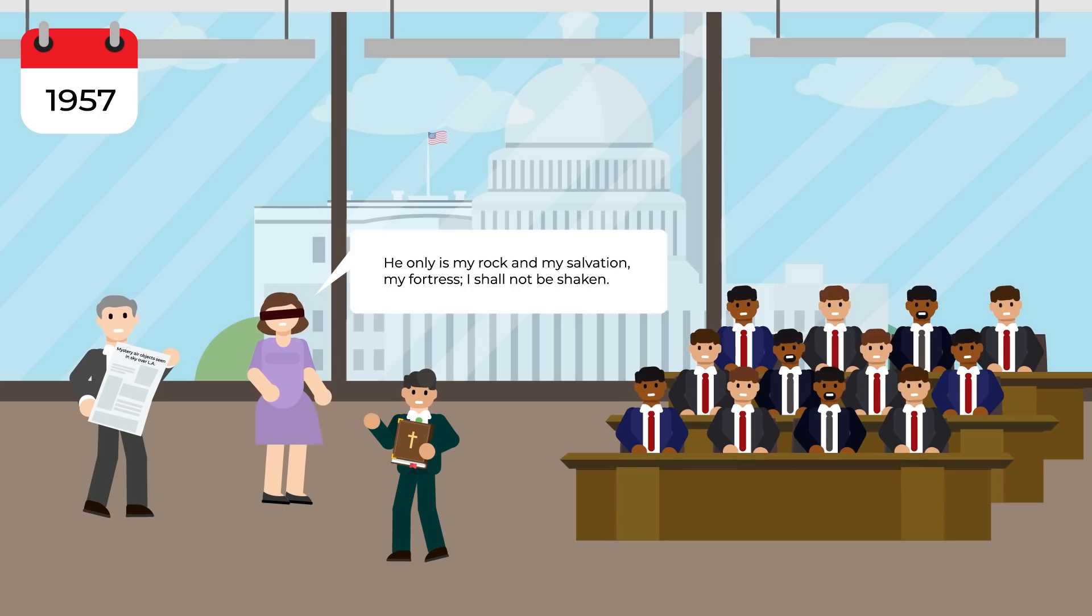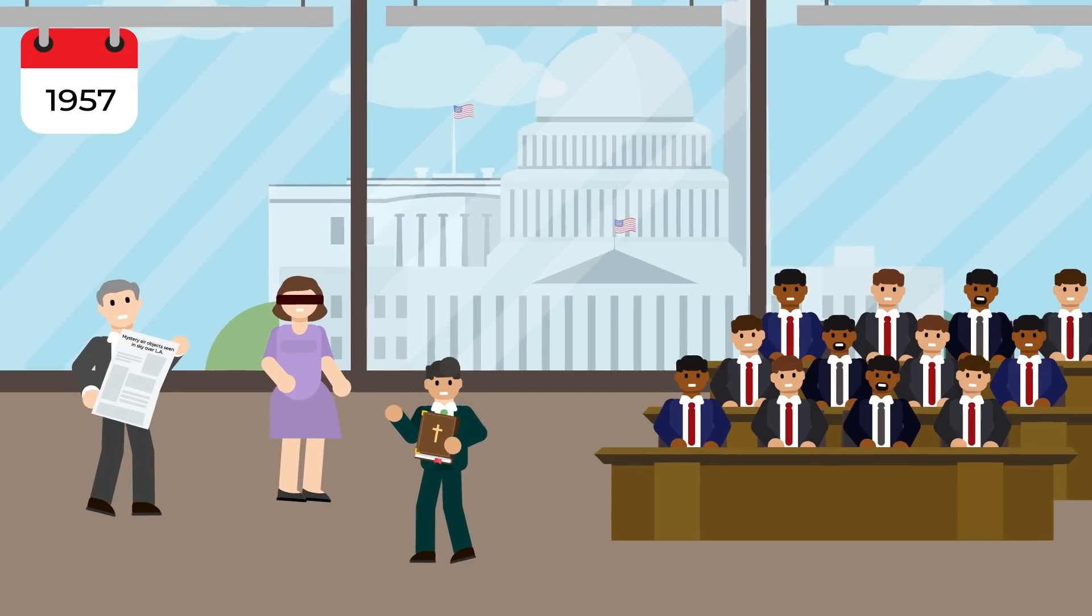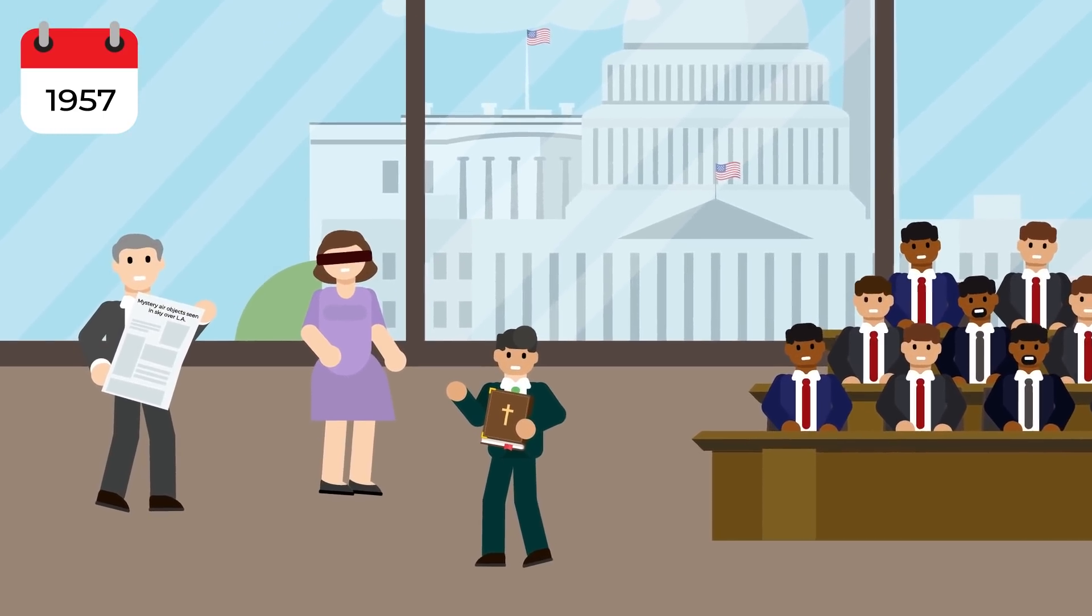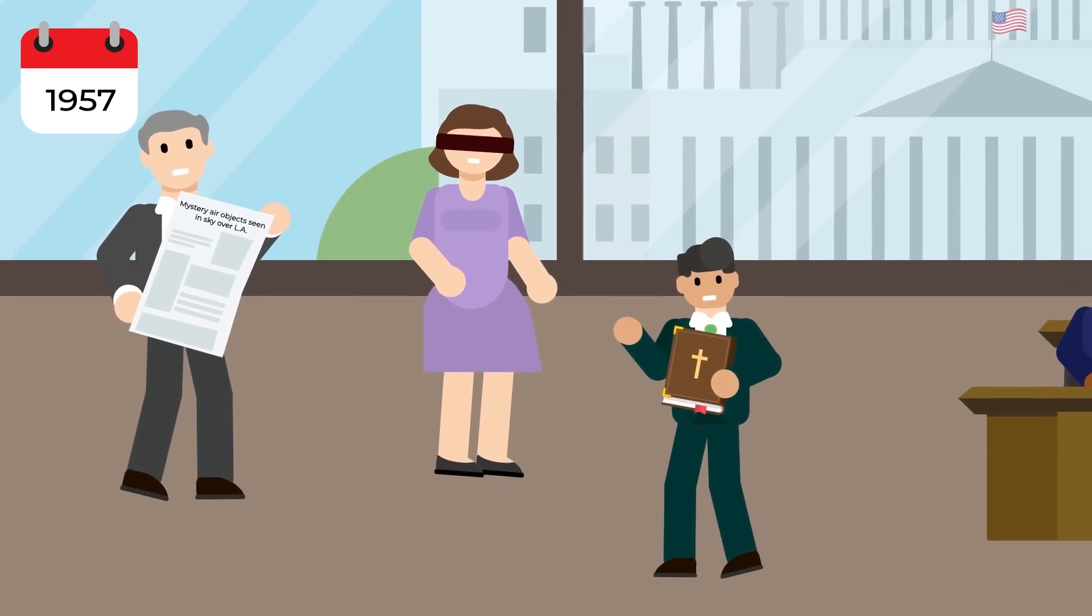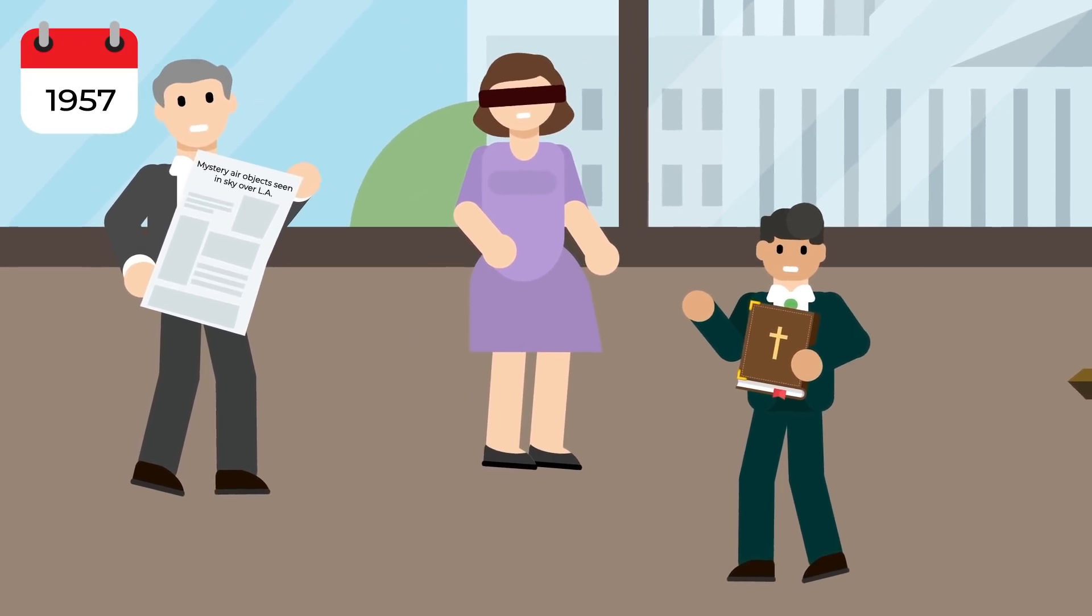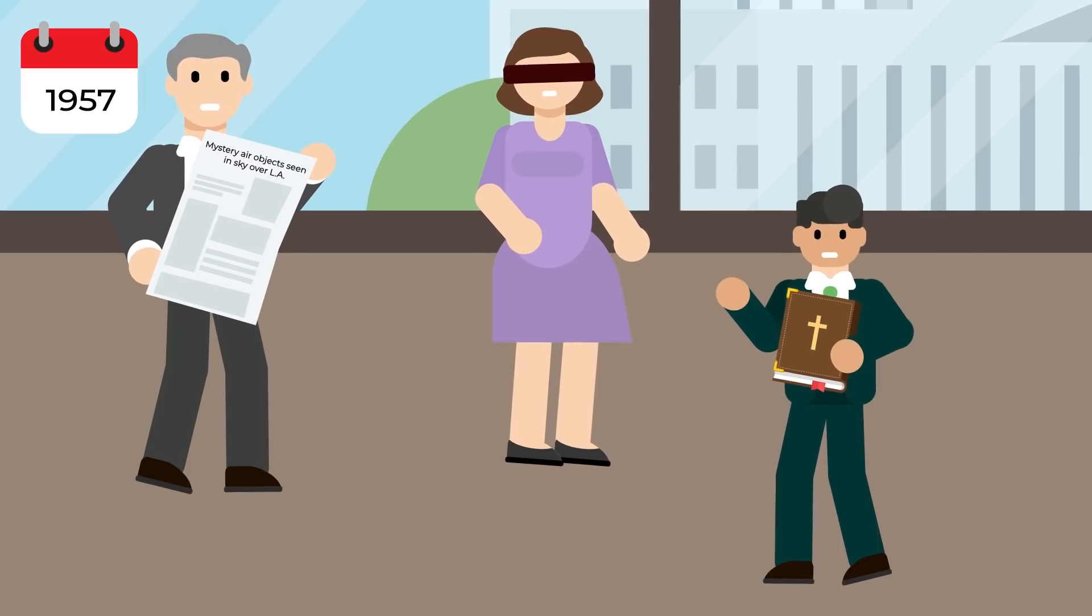At the demonstration, Mr. Foose used his own daughter, whom he had blindfolded, and wowed the audience as she was able to read from newspapers brought by reporters, the Bible, and various other bits of literature. What's more, Mr. Foose's daughter was able to distinguish color and even move around the room without bumping into objects.